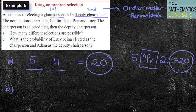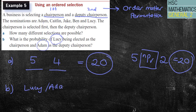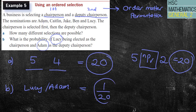Part B, what is the probability of Lucy being elected as the chairperson and Adam as the deputy chairperson? Well, if Lucy is selected first, then Adam is selected second. There's only one way that I can have Lucy, then Adam. Out of all the possibilities, that's only one way it can happen. Therefore, I've got one out of 20 as my probability.